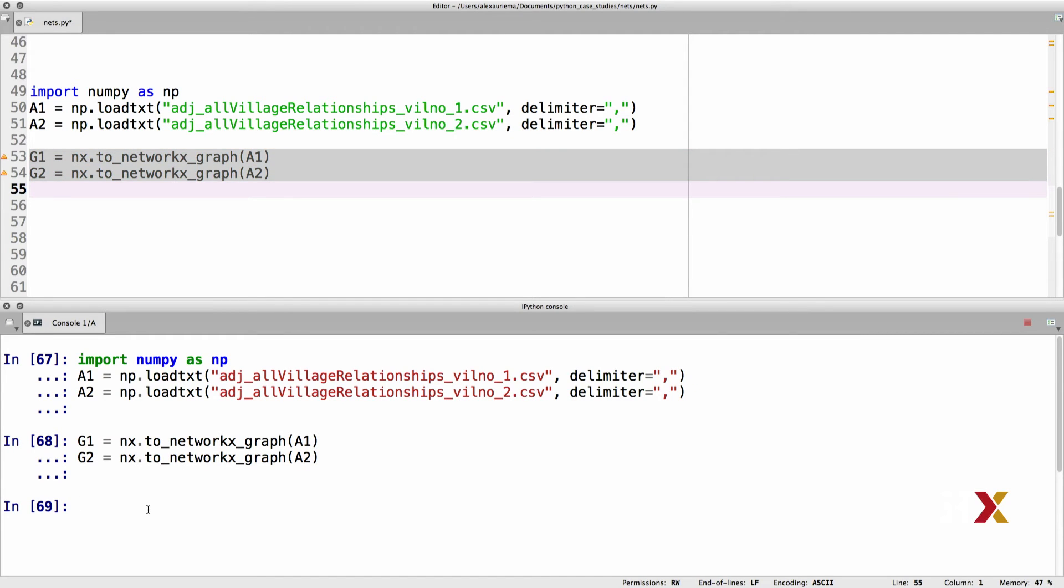Although networks can be quite complex, we can measure some of their properties using simple numbers. To get a basic sense of the network size and number of connections, let's count the number of nodes and the number of edges in the networks. In addition, each node has a total number of edges, its degree. Let's also calculate the mean degree for all nodes in the network.